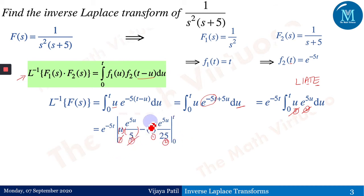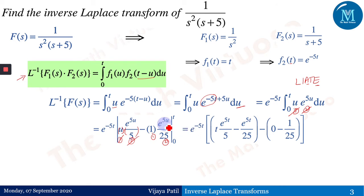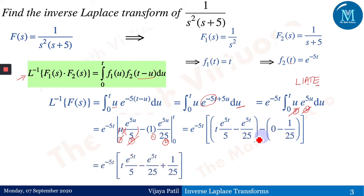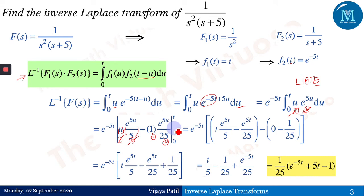I call this the 'musical chair method' — the roles of first and second functions change each step — which is integration by parts. Applying the limits from 0 to t: the upper limit substitutes u = t and the lower limit substitutes u = 0. Please pause here, put in the upper and lower limits, and try to arrive at the final answer.